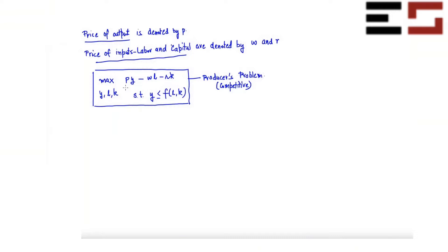When I said breaking the problem into pieces — if you have a more-than-two-variable problem, this is how you can approach it. You can do it in two steps: first maximize with respect to y, and then maximize with respect to L and K.